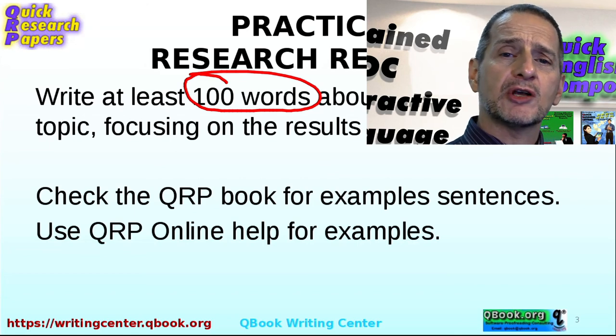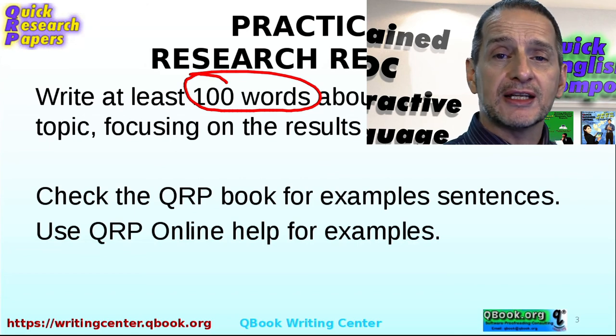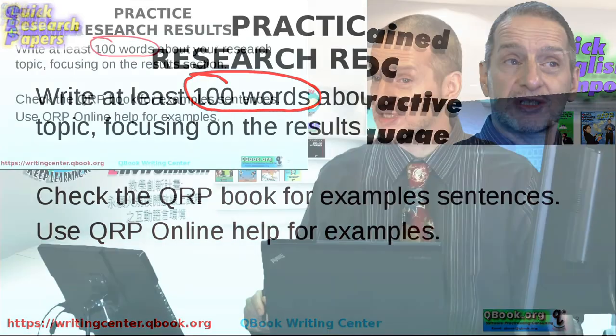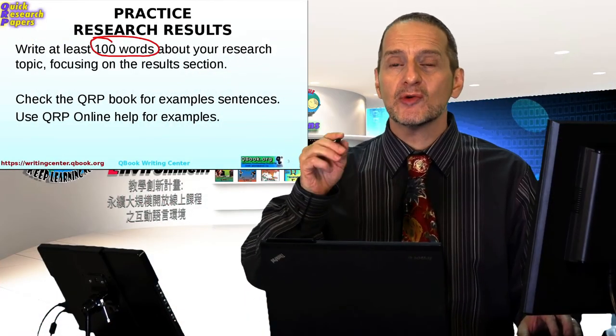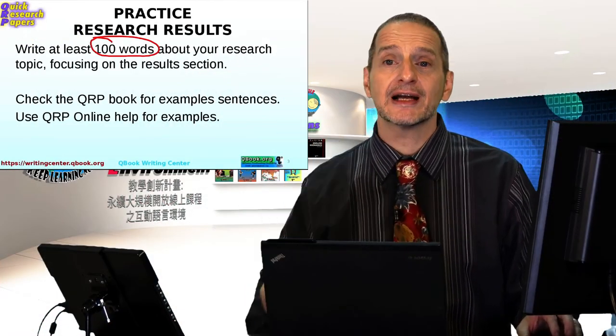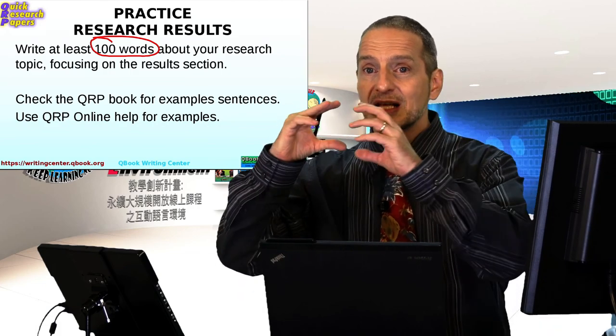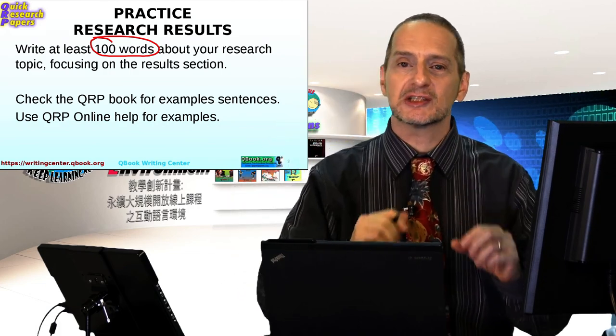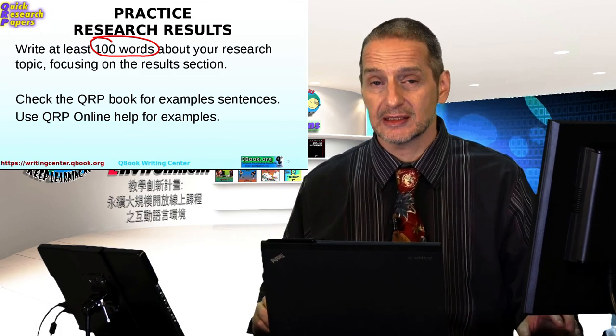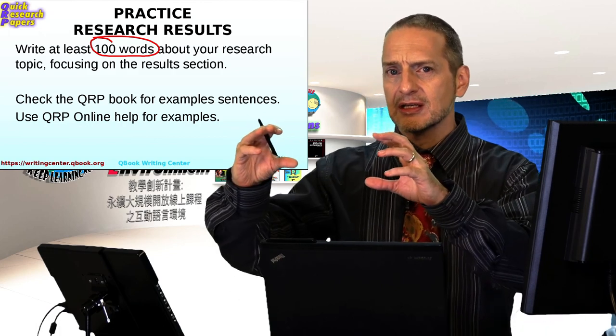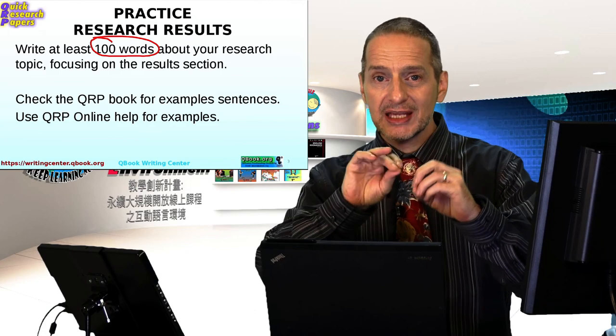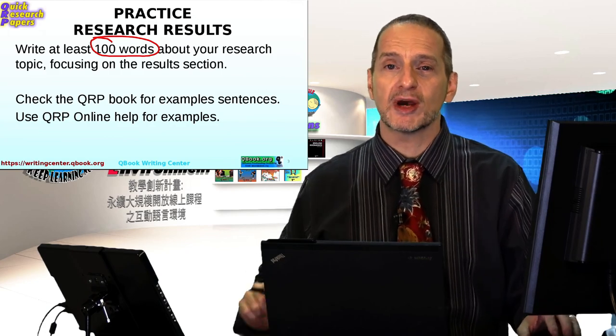If you don't have one, try to pick one by using Google Scholar to find a research topic that you're interested in. Remember, use your QRP online system and there's always that little yellow box that appears next to where you're writing. You can click there to get example sentences. It's a great idea to try to copy some sentences and then change it to match what you're writing about.